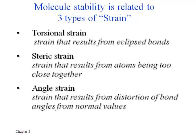On that last slide with butane we saw the distinction between eclipsed and staggered conformations, but also among the staggered ones the distinction between gauche and anti. When we're comparing conformations we have these different types of strain that we are dealing with. The first term you will need to know is torsional strain — torsional means twisting, and it has to do with the strain that accounts for the difference between staggered versus eclipsed conformations.